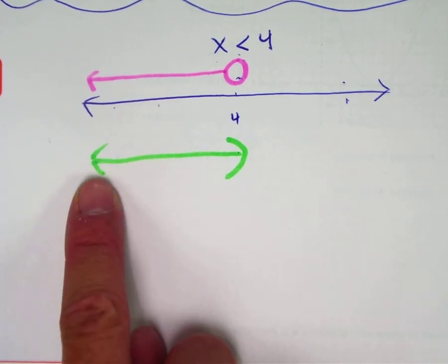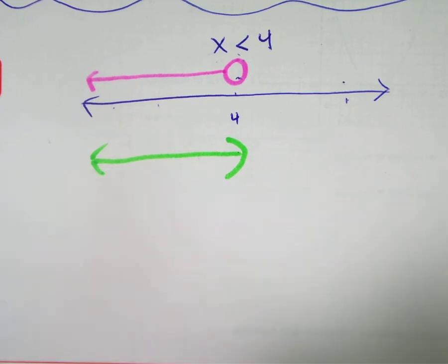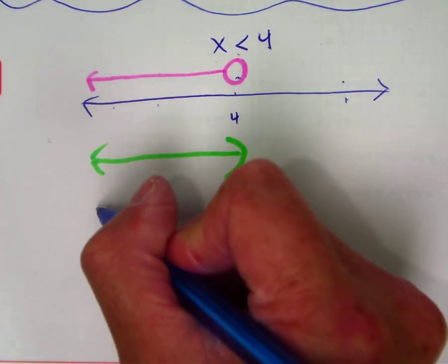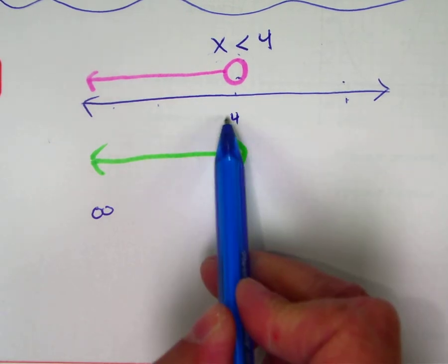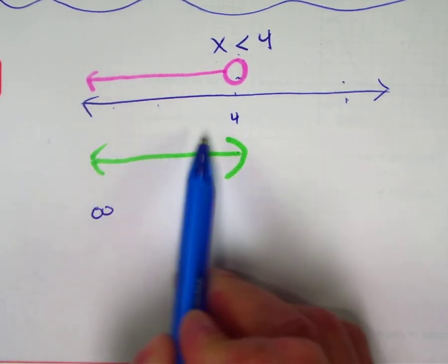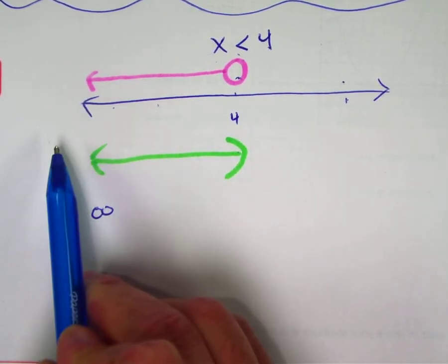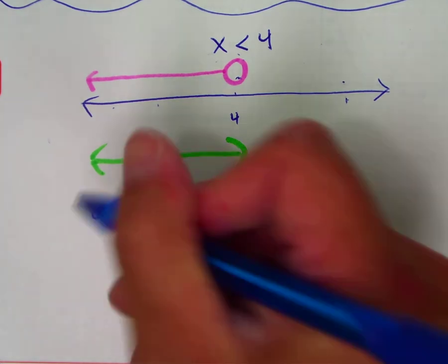I don't have a symbol. I don't have a bracket or a parentheses yet. I have this arrow. Class, what does this arrow represent? All the numbers going to the left. Someone said infinity. But what do you notice about those numbers if I keep going left? They're positive or negative numbers? Negative.